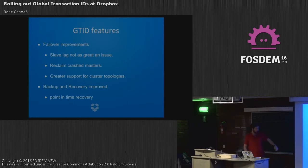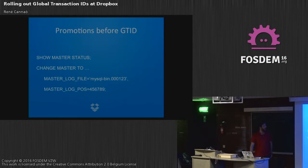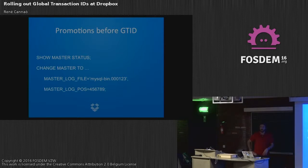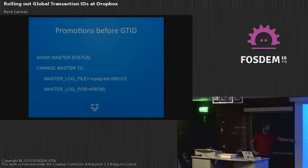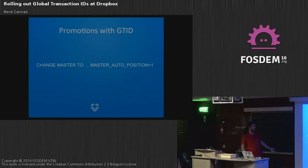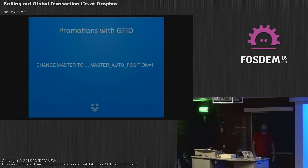How do you do a promotion before GTID? First, make sure slaves are in sync with the master, then promote one slave to become the master. On that server run 'SHOW MASTER STATUS' to see the current position, then on each slave run 'CHANGE MASTER TO' specifying hostname, username, password, and the master log file and master log position parameters. With GTID, it's much easier: you still run 'CHANGE MASTER TO' with hostname, username, and password, but simply specify 'MASTER_AUTO_POSITION=1' and it will resume replication from the right position.